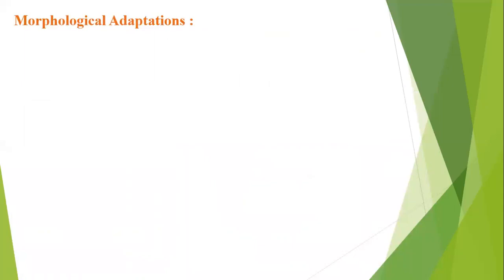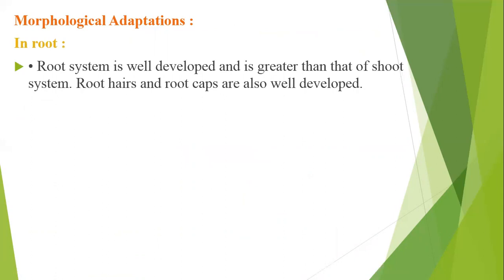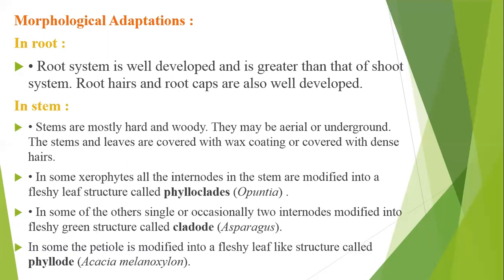Morphological adaptations of xerophytes. First: root system. The root system is well developed and is greater than the shoot system. Root hairs and root caps are also well developed. Second: stem. Stems are mostly hard and woody. They may be aerial or underground. The stems and leaves are covered with wax coating or dense hairs.